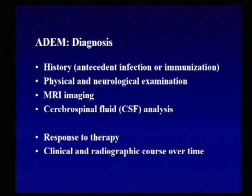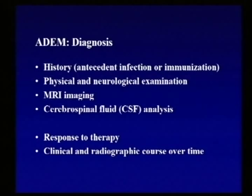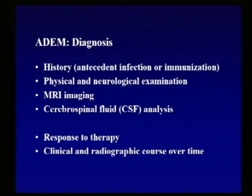We commonly analyze the cerebrospinal fluid by lumbar puncture, which reflects evidence of overactivity of the immune system — too many white blood cells and elevated protein levels. We often use the response to therapy as a tool to decide whether the patient really has ADEM. Many times we use corticosteroid treatments in the acute phase to reduce inflammation and facilitate recovery, aiming to get bad inflammation under control quickly before there's collateral damage to nerves and myelin.